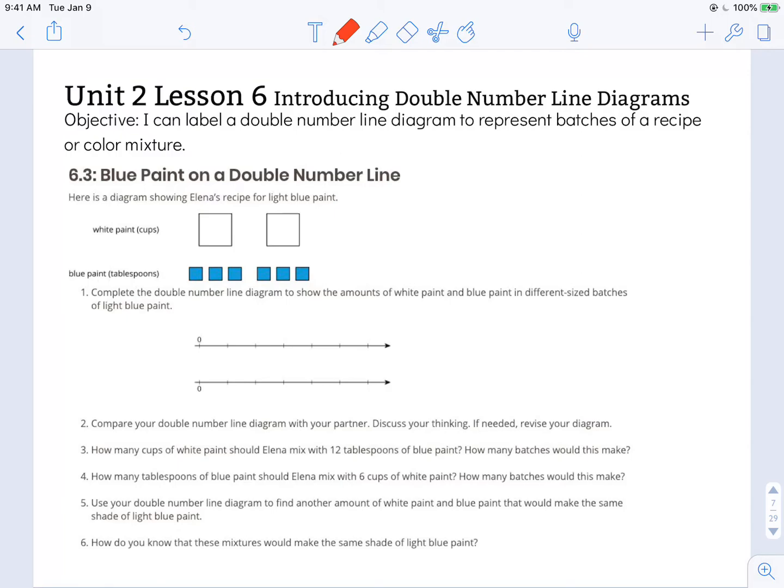We're looking at activity 6.3, blue paint on a double number line. It says here is a diagram showing Elena's recipe for light blue paint. She uses two cups of white paint for six tablespoons of blue paint. So let's complete the double number line diagram to show the amounts of white paint and blue paint in different sized batches of light blue paint.